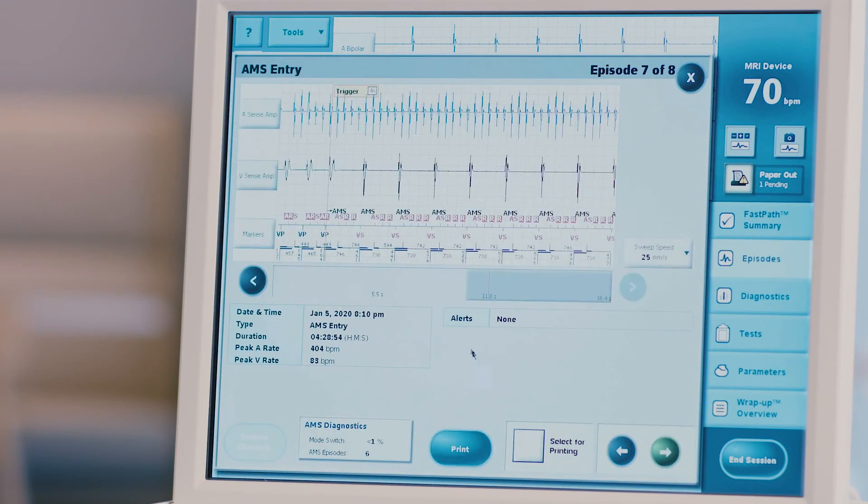The stored EGM will open on the screen and will include all relevant episode data: date, time, type, and duration. You can choose to print this episode now by pressing the blue print button at the lower right of the screen. You can also select this episode to be printed later when you are finished with the interrogation by checking the select episode for printing box at the bottom of the screen.